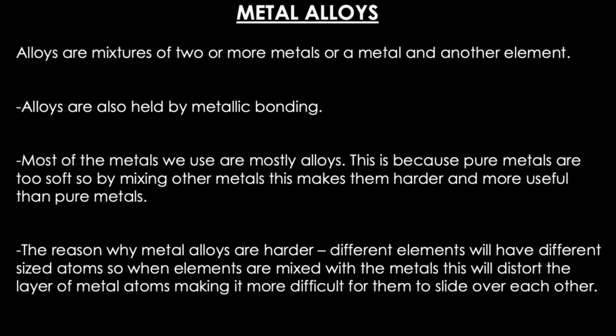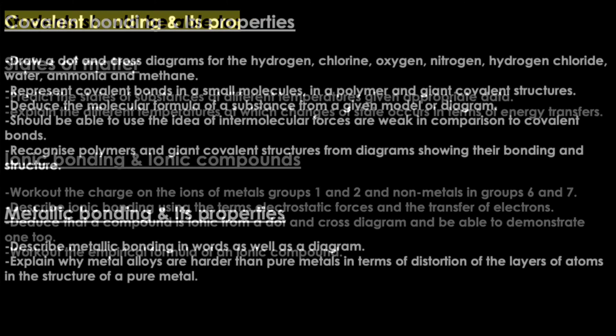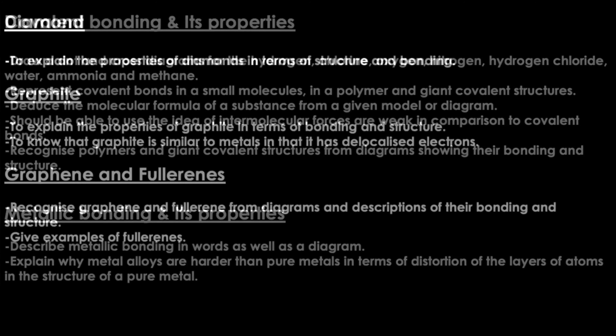Metal alloys. Alloys are mixtures of two or more metals, or a metal and another element, and they are held by metallic bonding. Most of the metals we use are alloys because pure metals are too soft — mixing other metals makes them harder and more useful. Metal alloys are harder because different elements have different sized atoms, so when mixed with metals they distort the layers of metal atoms, making it more difficult for them to slide over each other. The next slides summarize the key points for each topic covered in parts one and two that you need to know for the exam — pause the video and go through each point.